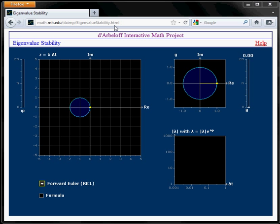In eigenvalue stability there are two complex planes of interest. There is the G plane, shown here in the upper right, and the lambda delta T plane, shown on the left.